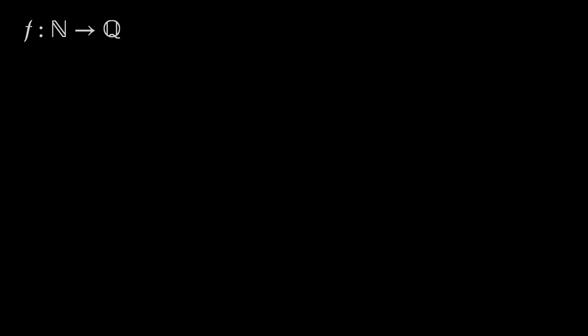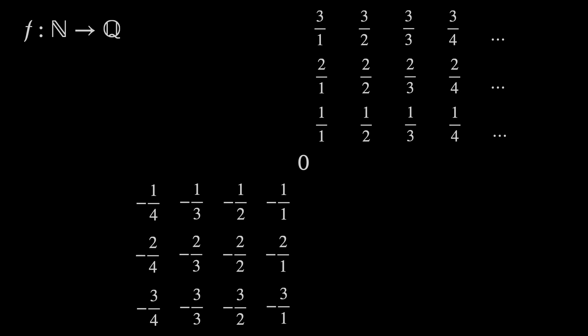We can also show that the rational numbers have the same cardinality as the natural numbers by constructing a bijection between them. We line up sequences of rationals, starting with 1/n, 2/n and so on, and the negative rationals on the other side. Then, spiralling outwards, taking care to avoid repeated fractions, we can go through them all one by one, and so there exists a bijection between them.